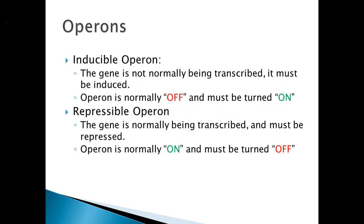There are two different types of operons: inducible operons and repressible operons. In the inducible operon, the gene is not normally being transcribed and must be induced — in other words, the operon is normally off and must be turned on. Whereas in a repressible operon, the gene is normally being transcribed and must be repressed, so the operon is normally on and must be turned off.